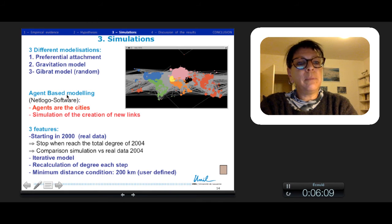We used agent-based modeling with NetLogo software. We defined agents of the cities and simulated the creation of new links. We start from 2000 in real data and stop when we reach the total degree of 2004. We compare the simulation with the real data. We made an iterative model with recalculation of degree at each step and put a minimum distance condition of 200 km.